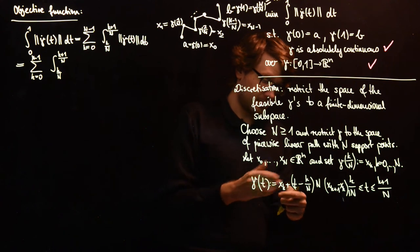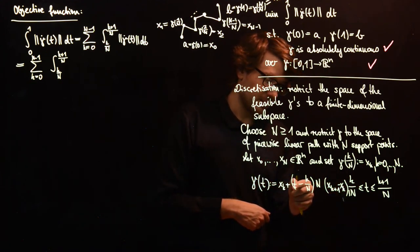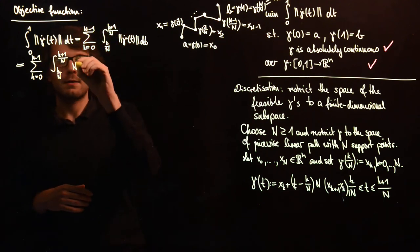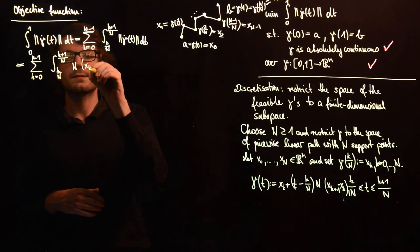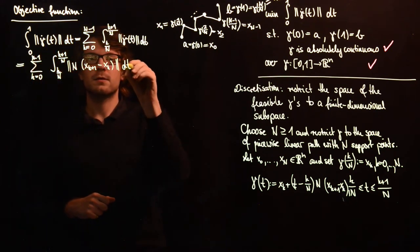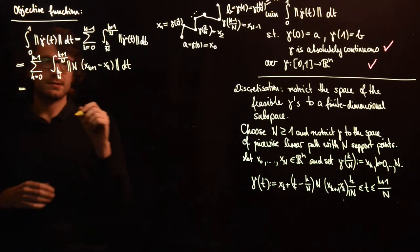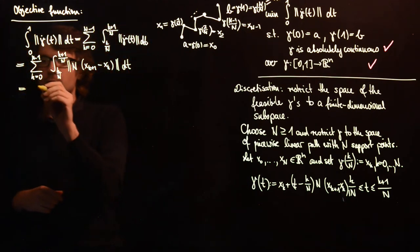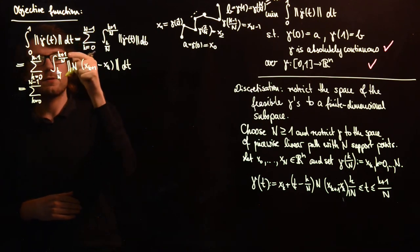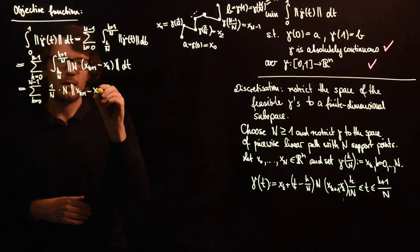Well, this is constant so you can ignore it, and all this other stuff here is also constant, so you end up with the thing which is multiplied with t. So it's capital N times xk plus 1 minus xk, and from this you have to take the norm and the integral. You see that this integrand does not depend on t, and therefore it's just the multiplication of the length of the interval with what's inside. So the length of the interval is 1 over n, and then you have n times the norm of xk plus 1 minus xk.